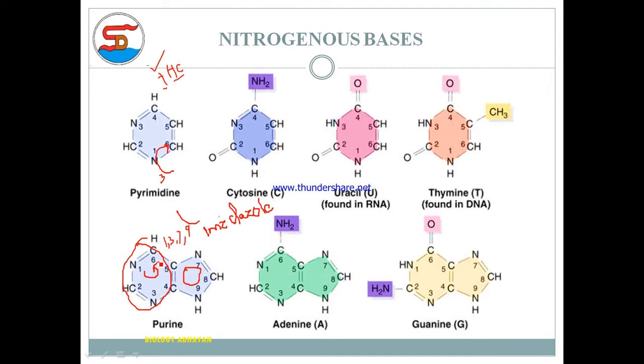Cytosine's chemical nomenclature is 2-oxy-4-amino-pyrimidine. At carbon position 2, there is an oxygen group, and at carbon position 4, there is an amino group. Uracil has oxygen at both positions 2 and 4, so it's called 2,4-dioxy-pyrimidine.